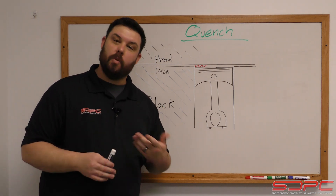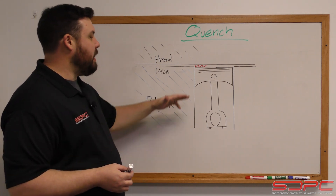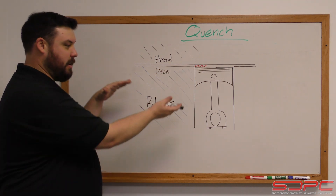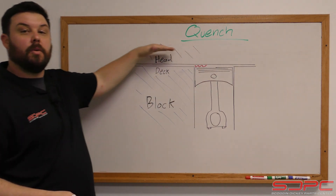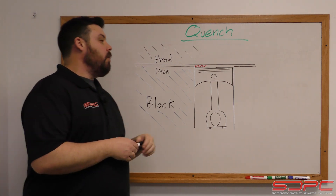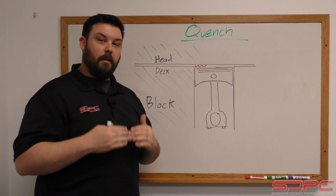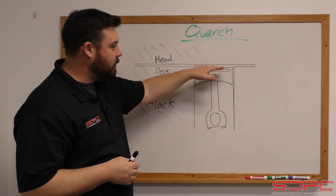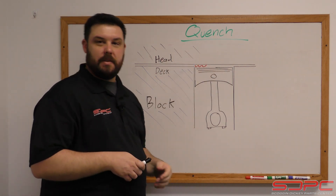Very simply, quench is when your piston is at top dead center. Here's a piston and a cylinder — this space up here is your cylinder head. When your piston is at top dead center, how far is that gap in between the top of the piston and the bottom of the cylinder head?